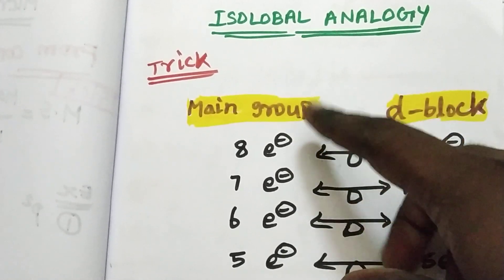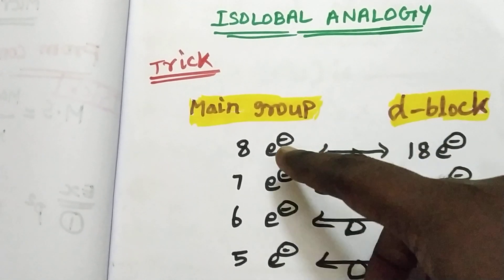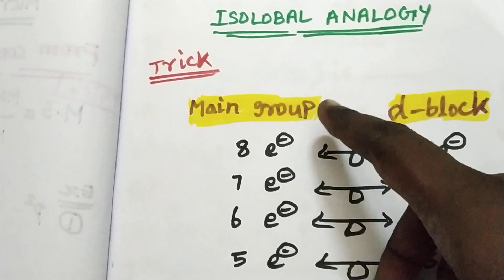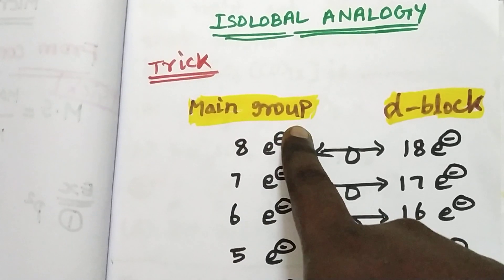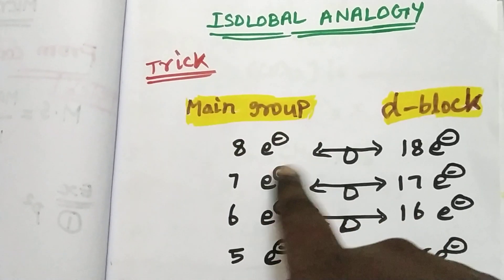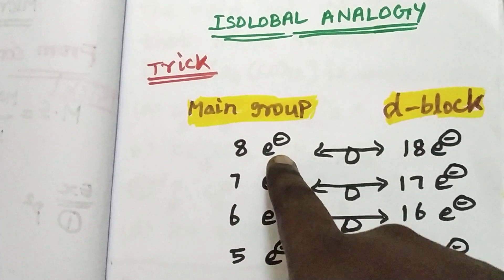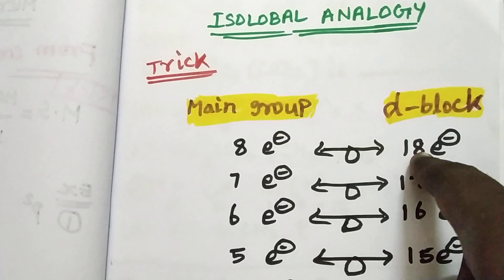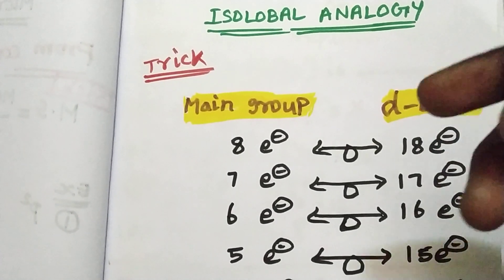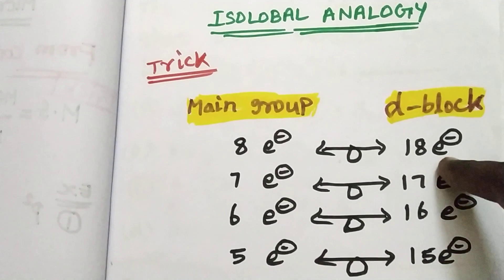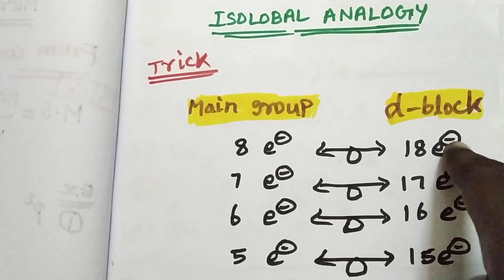If you have two components — main group elements form one compound and d-block elements form one compound — that is the Isolobal Analogy. This is the trick. Let's talk about the main group elements: that species' valence electrons form one compound. That means 8 electrons are isolobal with an 18-electron compound.